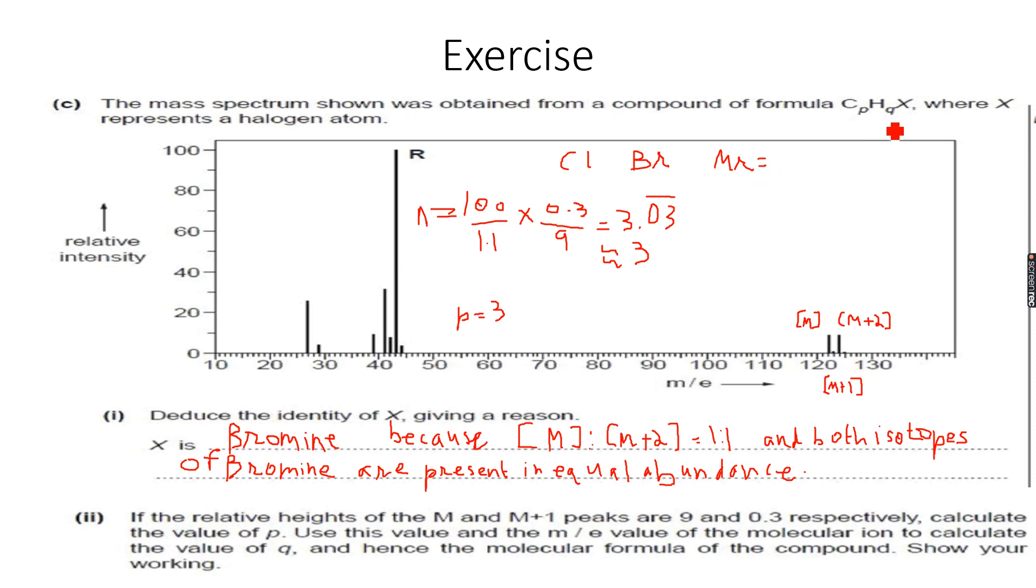We have 3 carbon atoms and we have 1 bromine atom, so when I subtract 36 for the 3 carbon atoms and 79 for the 1 bromine atom, then what I get is 122 minus 36 minus 79.